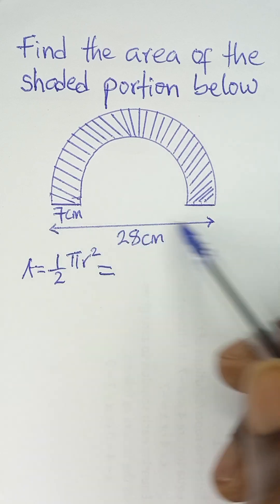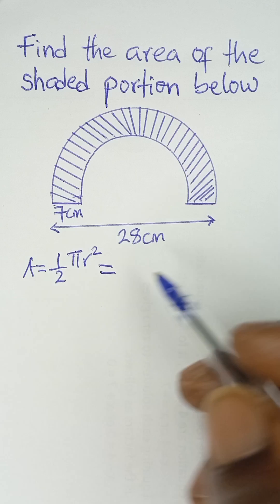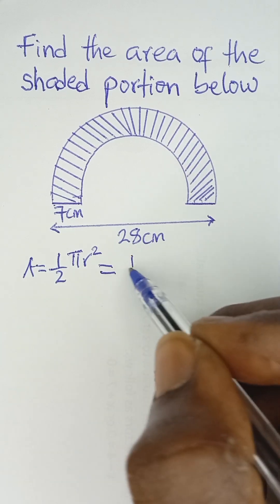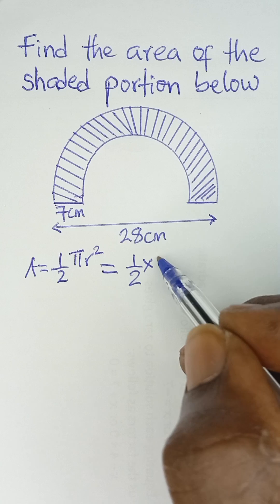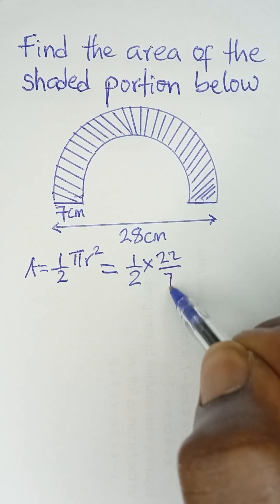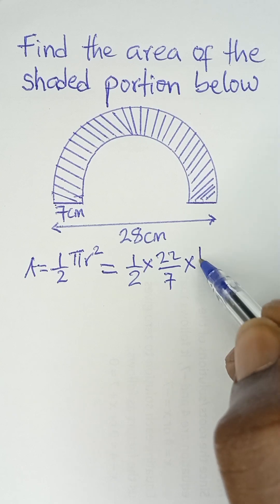This is 28 as the diameter of this full circle. So the radius will be 14. So the area will be half multiplied by, the value of π is 22/7, then multiplied by r², which will be 14.